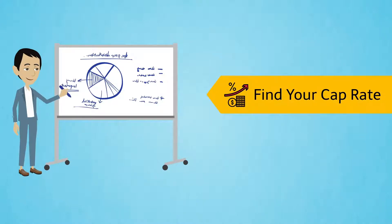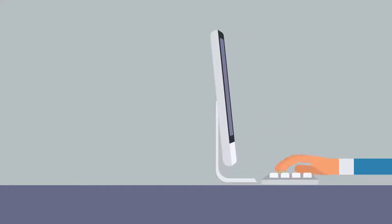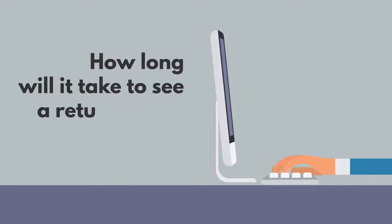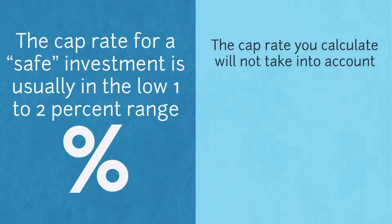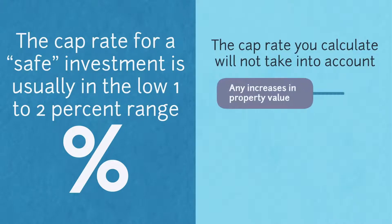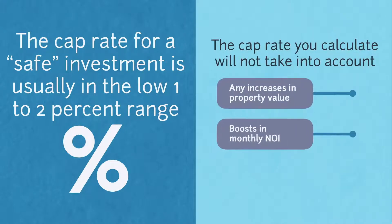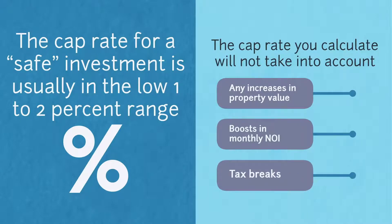Once an investor has calculated the NOI and cash flow of a potential deal, they should work to figure out their capitalization rate, or cap rate for short. Calculating this rate will answer the question: how long will it take to see a return on my investment? There are two things to remember about cap rates: number one, the cap rate for a safe investment is usually in the low one to two percent range; and two, the cap rate you calculate will not take into account any increase in property value, boosts in monthly NOI, and the many tax breaks that multifamily property owners receive.